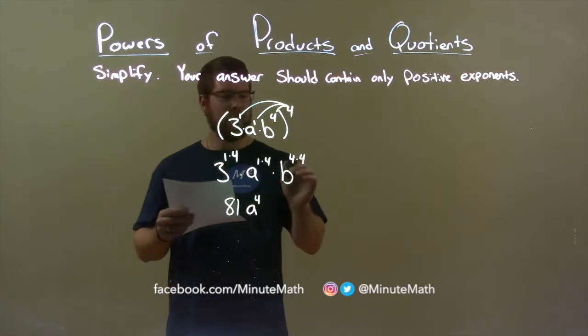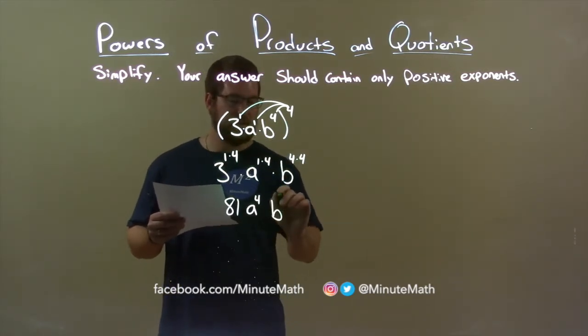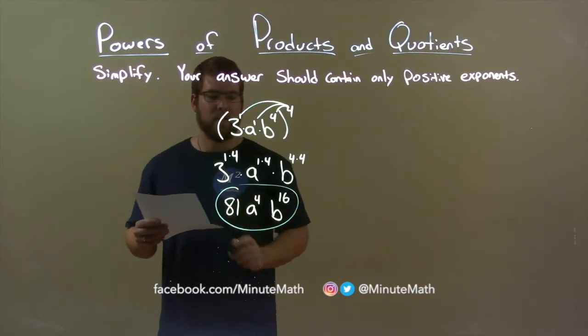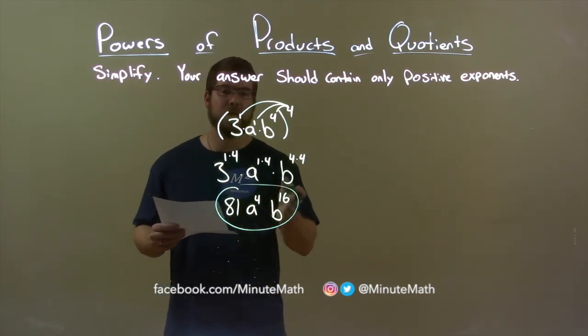And b, lastly here, we have 4 times 4, which is 16, so we have b to the 16th power. And so, my final answer is 81a to the 4th power, b to the 16th power.